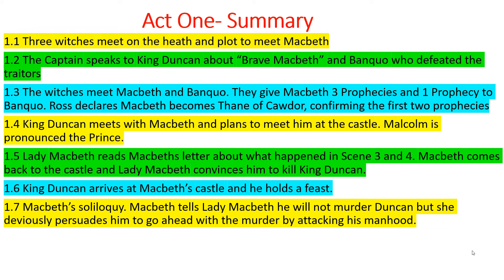Now Macbeth's instincts are activated. He thinks to himself: I'm already Thane of Glamis, affirming the witches' first prophecy; now I've been told I'm the Thane of Cawdor, ticking off the second prophecy. Does that mean I'm going to become the next king? Is something going to happen to King Duncan? Banquo notices Macbeth speaking to himself aside, and Macbeth comes back and says 'let's go meet the king' as if nothing happened — a suspicious shift in character.